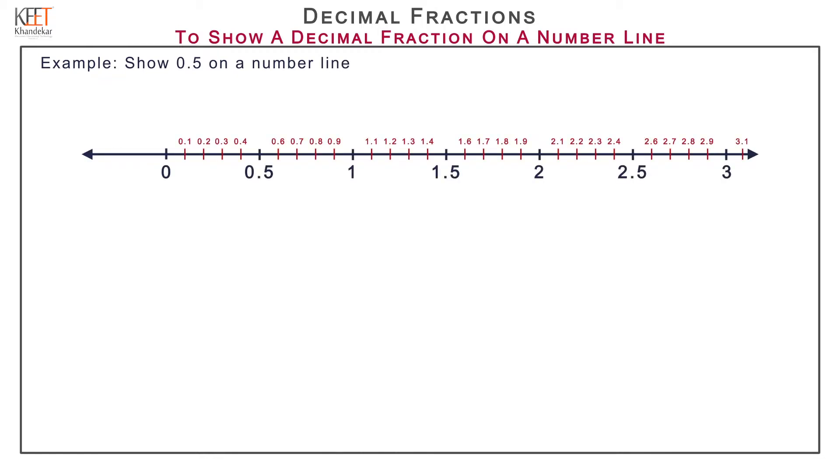To plot 0.5 on the number line, start from 0 and count up to 0.5. That is 0, 0.1, 0.2, 0.3, 0.4, 0.5. And mark 0.5 as shown on the screen.